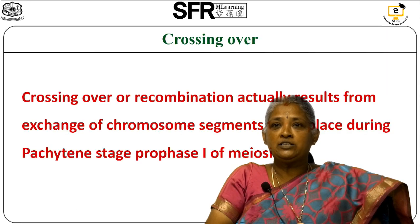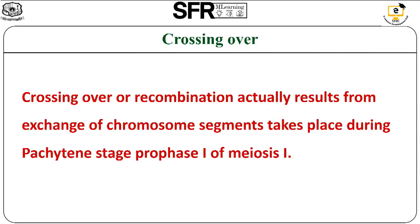First we shall see what is meant by crossing over. Crossing over is otherwise called as recombination. Recombination results in an exchange of chromosome segments that actually takes place during the pachytene stage of prophase I of meiosis I.